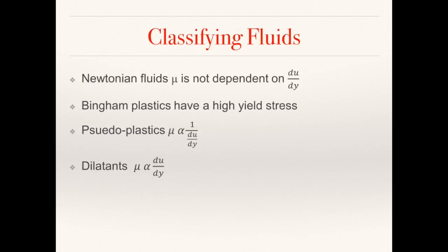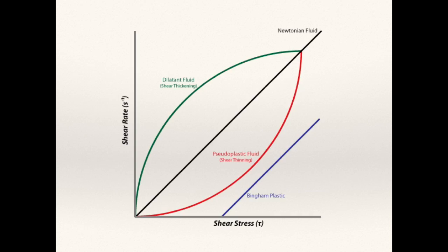Finally, dilatants, or shear thickening fluids, have a viscosity which increases with shear stress, making the fluid thicker as shear stress increases. Water-soaked sand is a great example of a dilatant. You may notice that when you walk on wet sand at the beach, the area you stand on becomes more solid and creates a dry area under your foot. This graph provides a visual representation of the differences between each type of fluid.